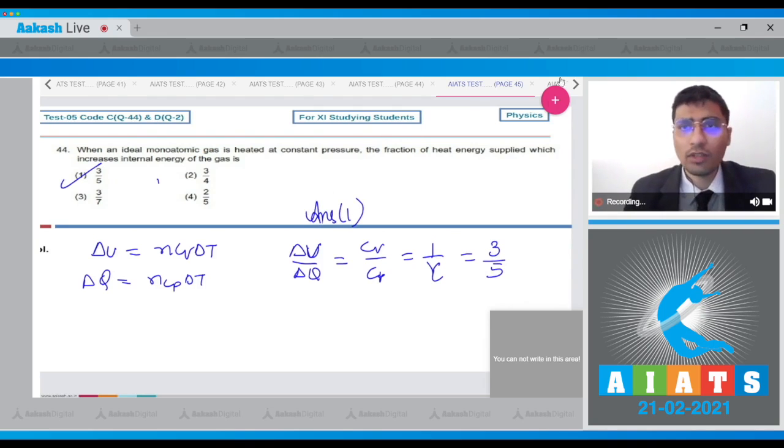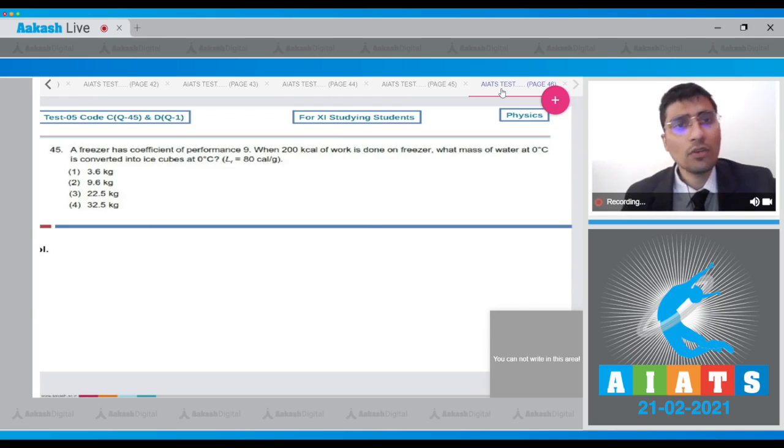Now let us solve question 45. A freezer has a coefficient of performance 9. When 200 kcal of work is done on the freezer, what mass of water at 0°C is converted to ice cubes at 0°C?